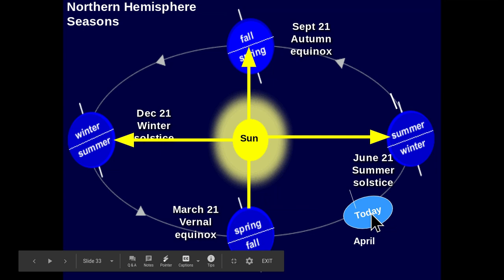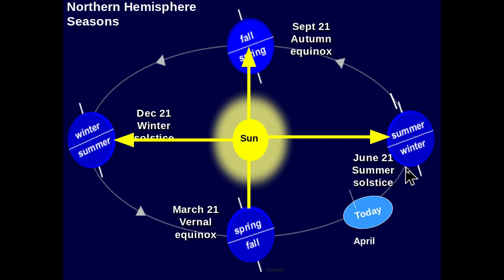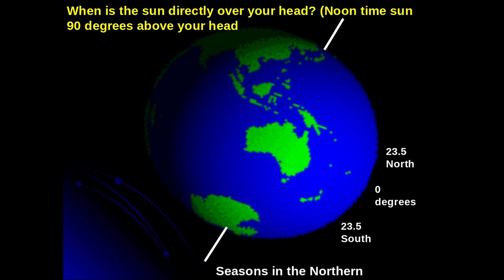Today, if you look at the bottom of the screen, we're in April. So we are now approaching June 21st and the days should be getting longer. When we reach June 21st, in about a month and a half, we'll be at the longest day of the year.